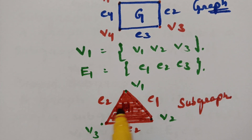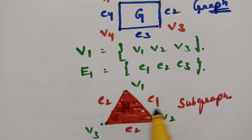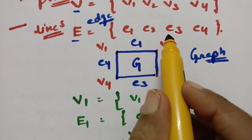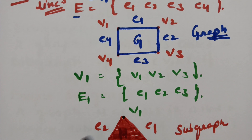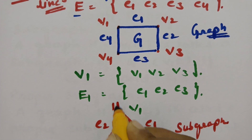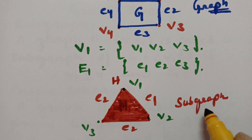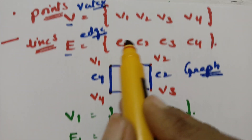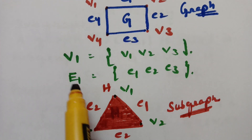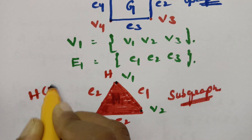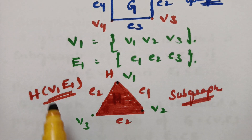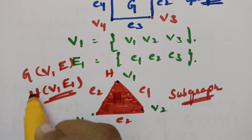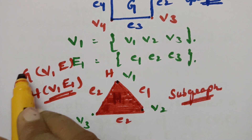This graph H is formed with a few vertices from the main set G and a few edges from the edge set. So this is the main graph G and H is the subgraph. We select few points from main set V to get V1, and few edges from E to get E1. H = (V1, E1) is formed by selecting a subset of vertices and edges from G, making it a subgraph of the main graph.